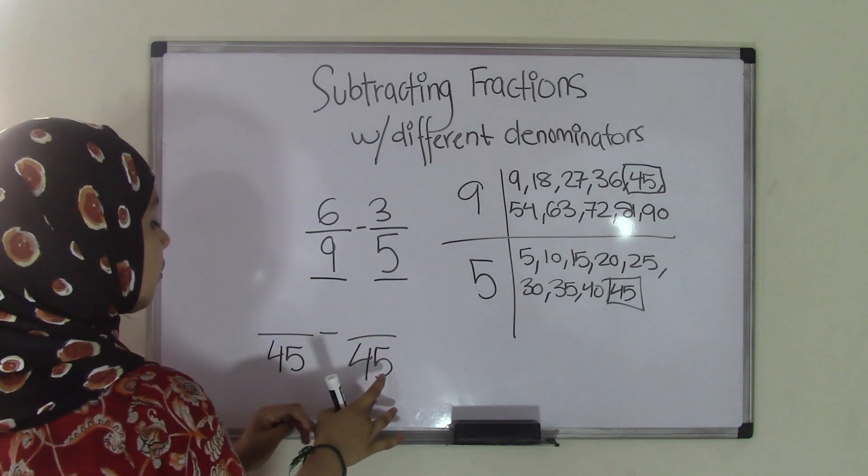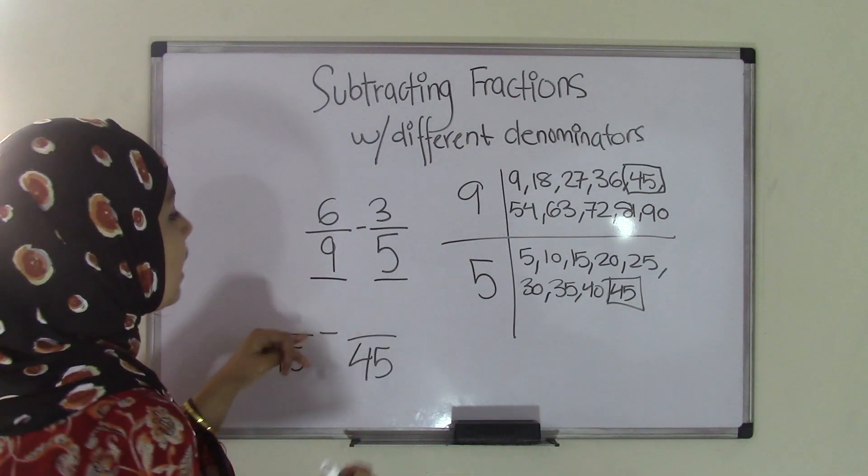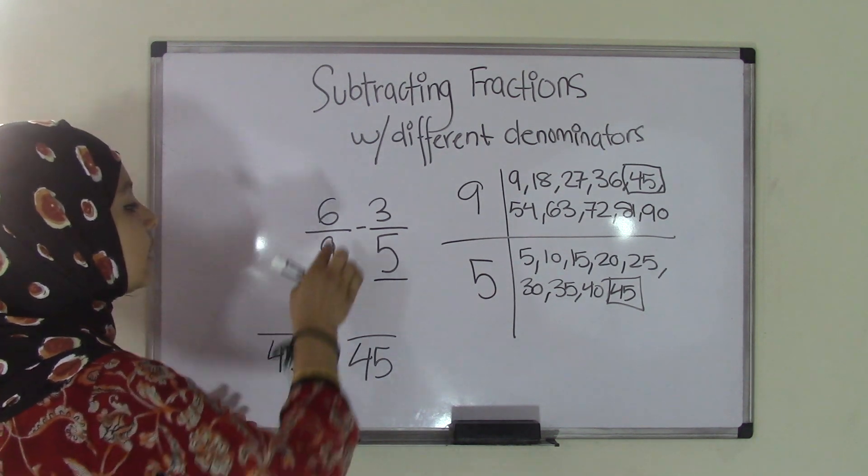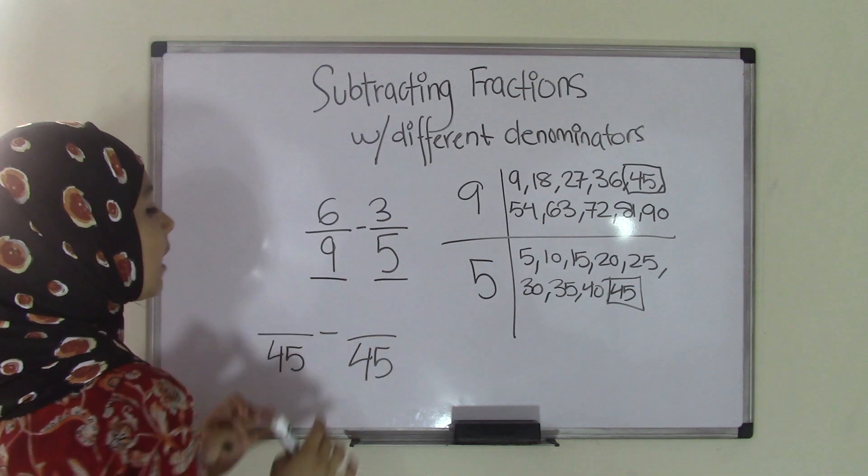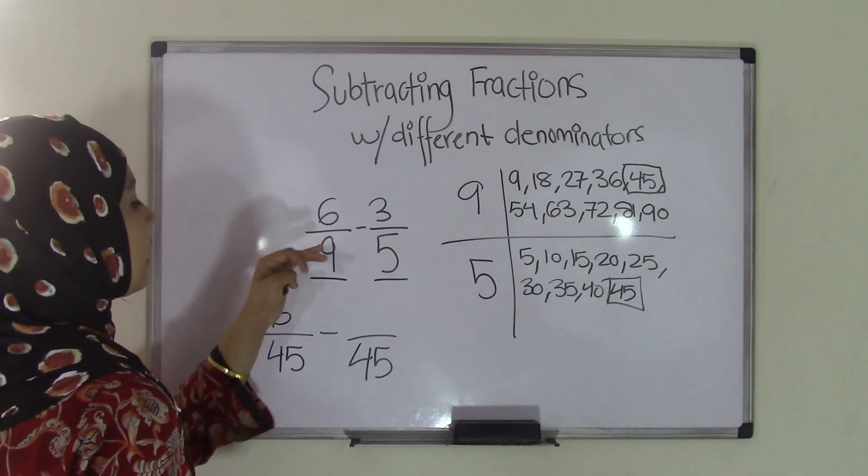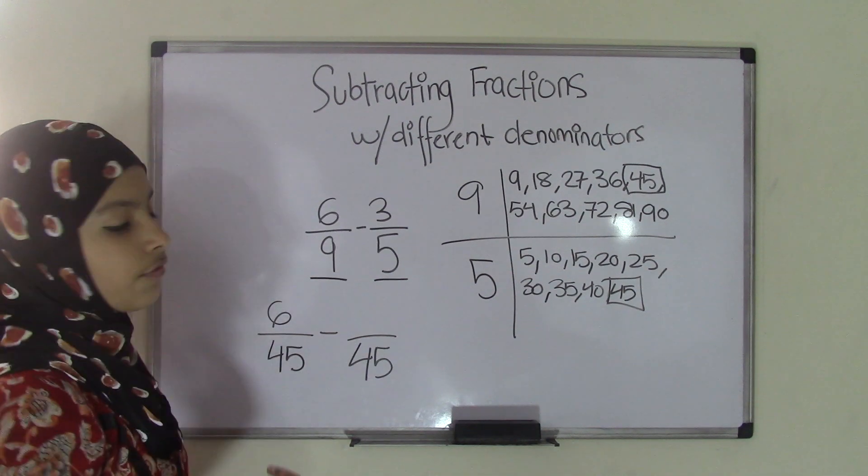So now we have common denominators, except we don't have our numerators yet. Now remember this rule. Once you find a common denominator, you can't just take your original numerator, which is 6 and 3, and put them here because that would change the fraction. Because if we put 6 over here, then 6/9 and 6/45 are two different fractions, right?